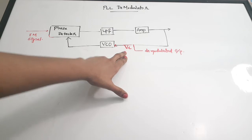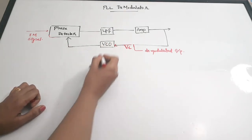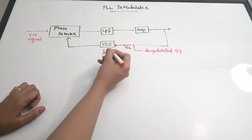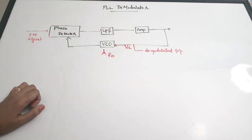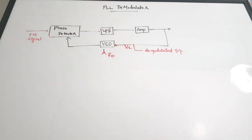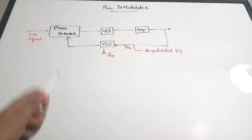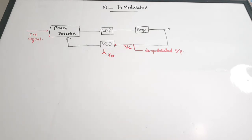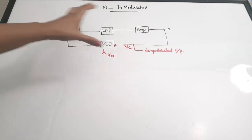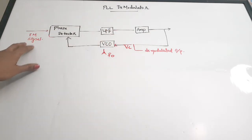The free-running frequency of this VCO is F0. When the PLL is set in locked condition with the input FM signal, the frequency of the VCO will be equal to the input frequency. That is the condition — they follow a specific relationship when the phase-locked loop is in locked condition.